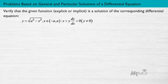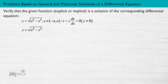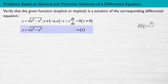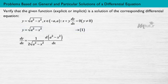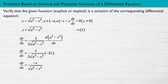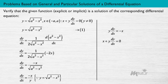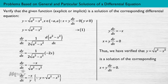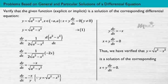Verify that the given function, explicit or implicit, is a solution of the corresponding differential equation given on the screen. From the question, we have the function y = √(a² − x²) — name it equation 1. Now differentiate equation 1 with respect to x. Differentiating the terms and simplifying, we get the first derivative, and simplifying further we get the derivative as x + y·(dy/dx) = 0. Thus, we have verified that y = √(a² − x²) is a solution of the corresponding differential equation.